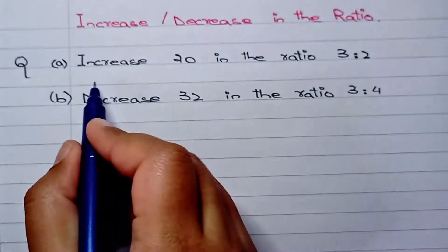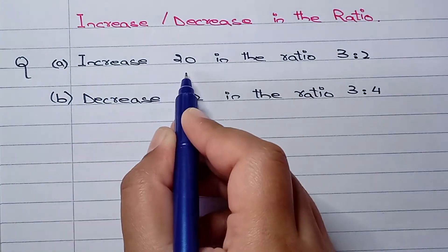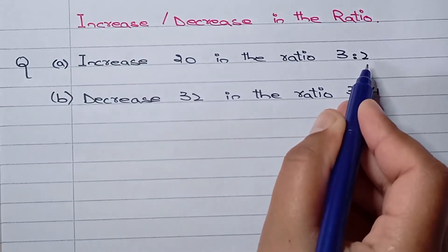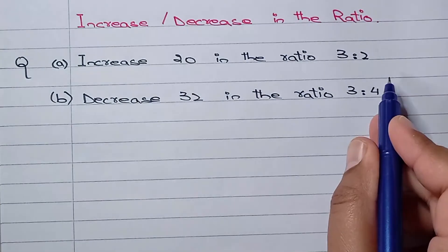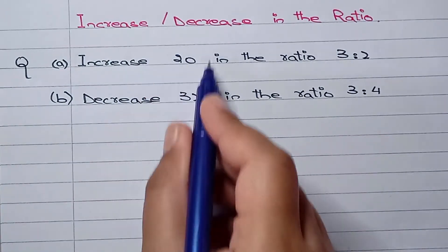For example, in part a I have given increase 20 in the ratio 3:2. So how can we find that increase of 20 in that ratio?